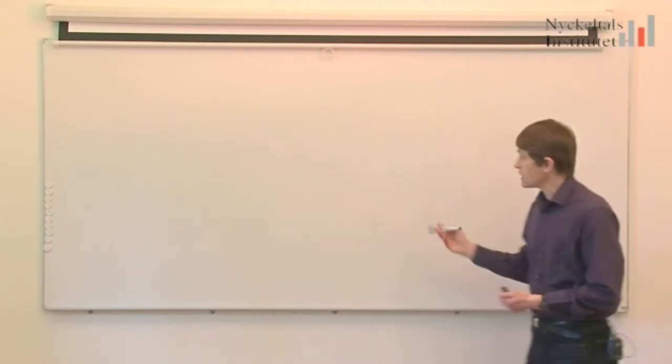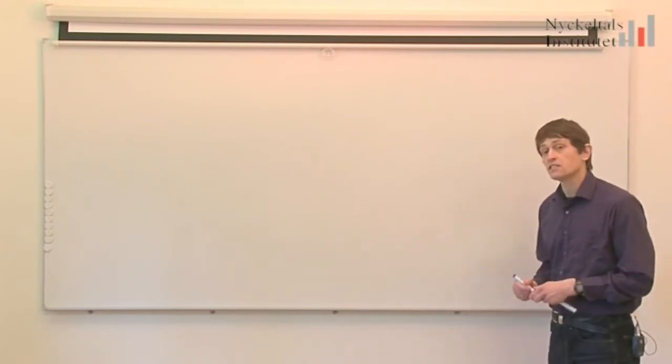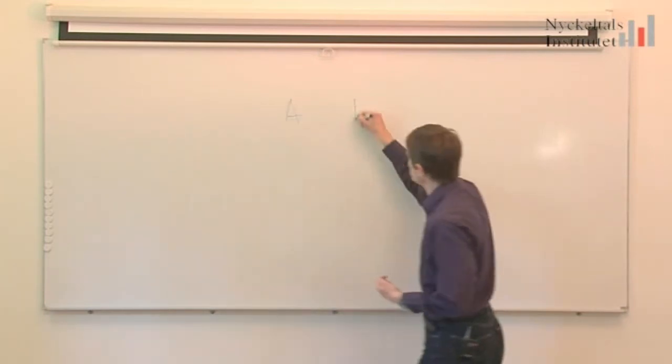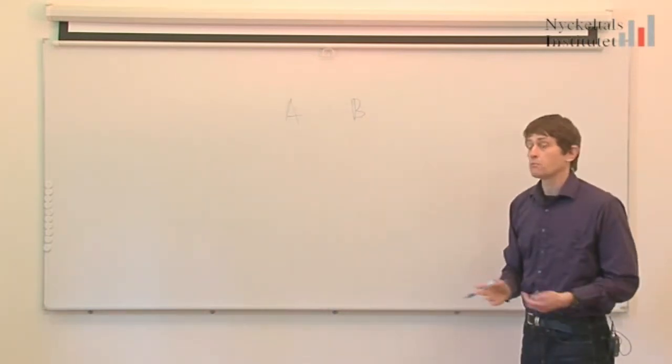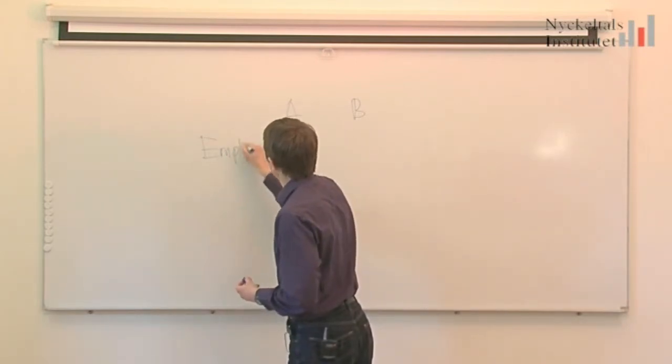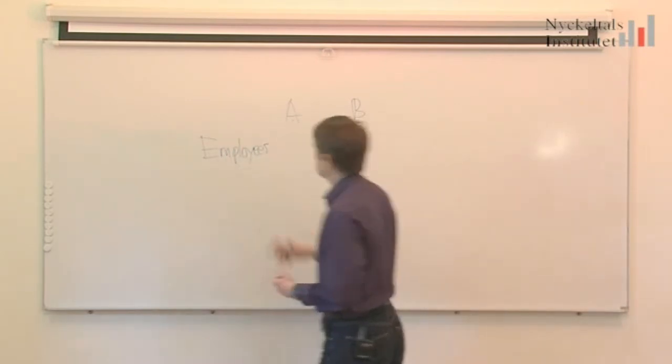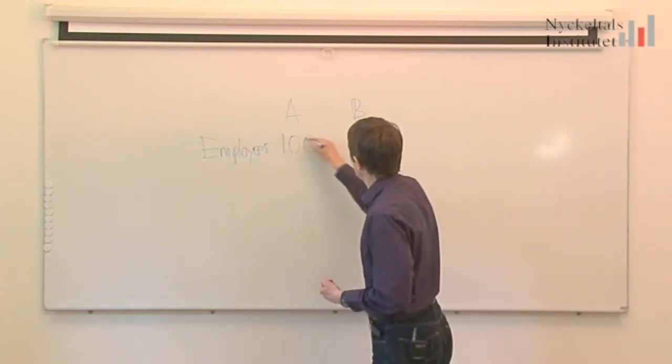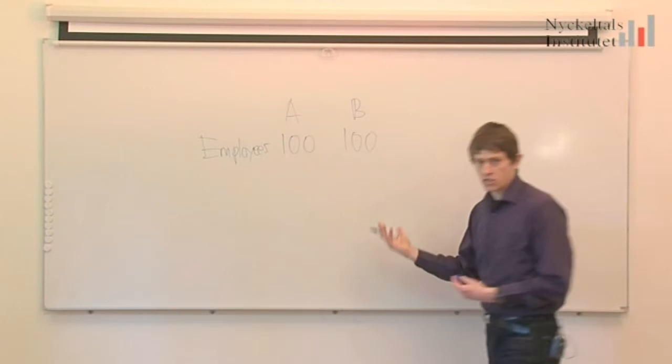I shall take an example of how you can calculate and express this key indicator. We have two organizations or two divisions in a big company, and we have employees. Because I want it to be easy to calculate, let's say we have 100 employees in each division, in each organization.